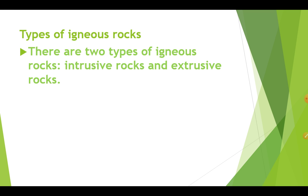What is an intrusive igneous rock and how is it formed? Intrusive igneous rock is formed when the molten magma cools down deep inside the earth's crust. For example, granite. Since they cool down slowly, they form large grains. Grinding stones used to prepare powder of spices and grain are made of granite. So granite is used in construction as well as for grinding.